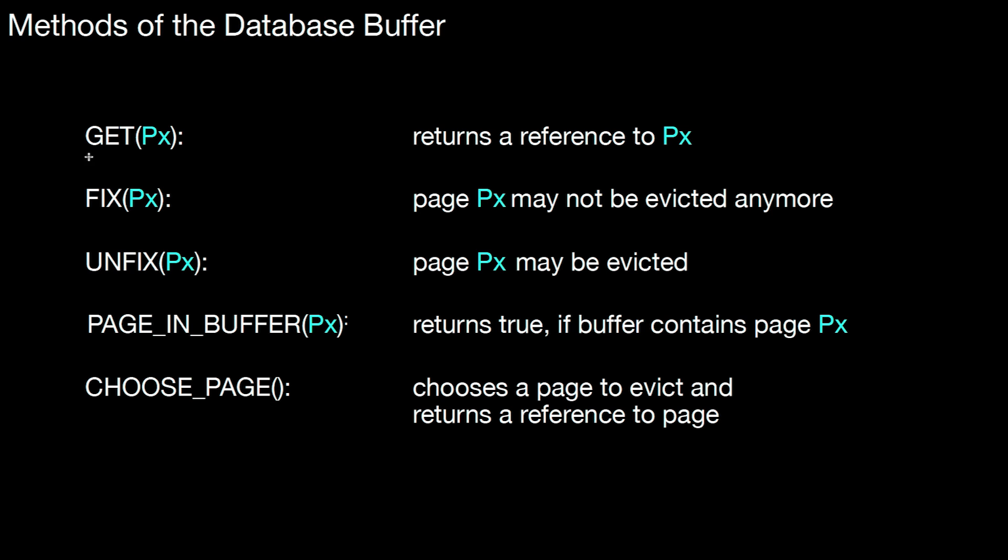So let's look at how GET is implemented. What happens if we call this method? If you're interested in a particular page, page X, what happens is the buffer checks whether it already has that page. If the page sits already in the buffer, we don't have to do much more. And if it doesn't exist, we have to do something, which means we have to read that page from the layer underneath. Let's assume it's hard disk. We have to read it from the hard disk into the buffer.